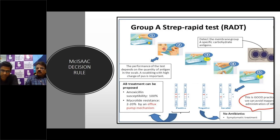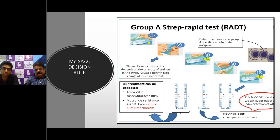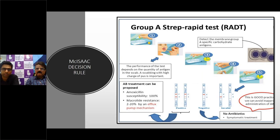The American Academy of Pediatrics mandates the RADT test, where facilities are feasible, prior to initiating antibiotics. The RADT detects the carbohydrate antigen present in the Streptococcus membrane — we take a throat swab from a pus-containing area, and it helps detect the carbohydrate antigen of Group A Streptococcus present within the membrane. Results come as positive or negative, and you treat accordingly.